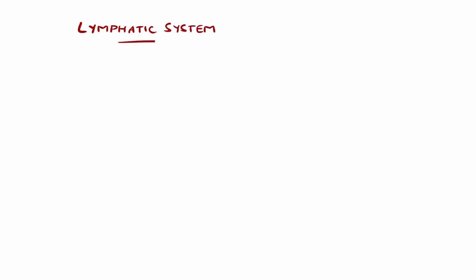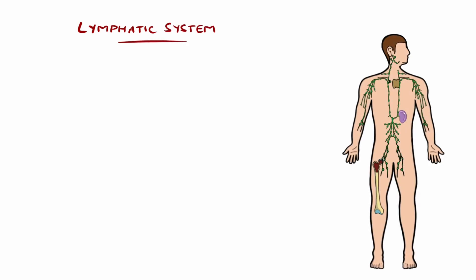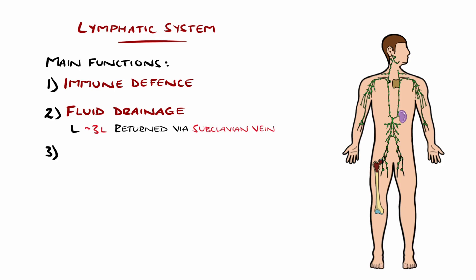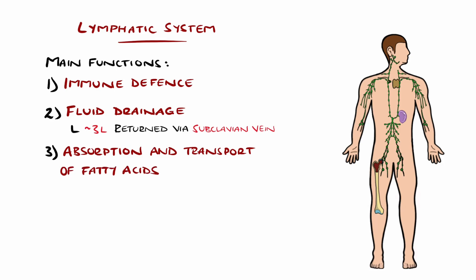To understand lymphoma, it is important to know the lymphatic system, which is an open circulation within the body that has three main functions. These are immune defence, particularly the adaptive immune response, as lymphocytes are the main cells found in the lymphatic system. Second is aiding in fluid drainage — three litres of interstitial fluid is returned to the heart by the lymphatic ducts draining into the subclavian veins. Thirdly, it also has a role in absorption and transport of fatty acids from the small intestine.